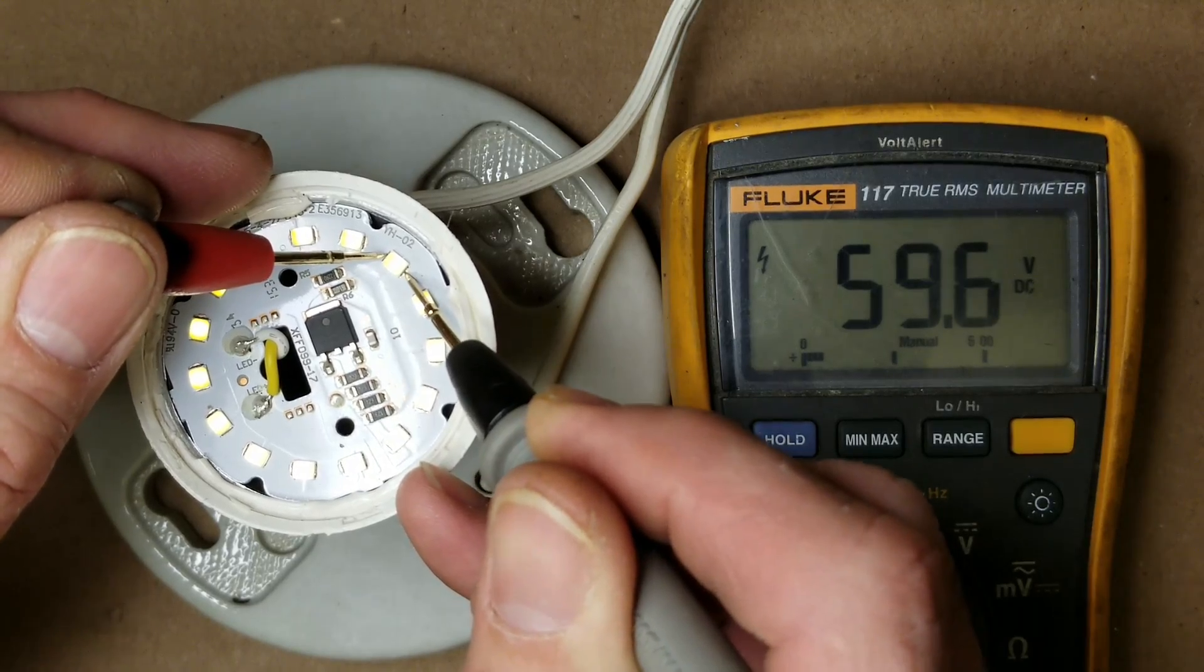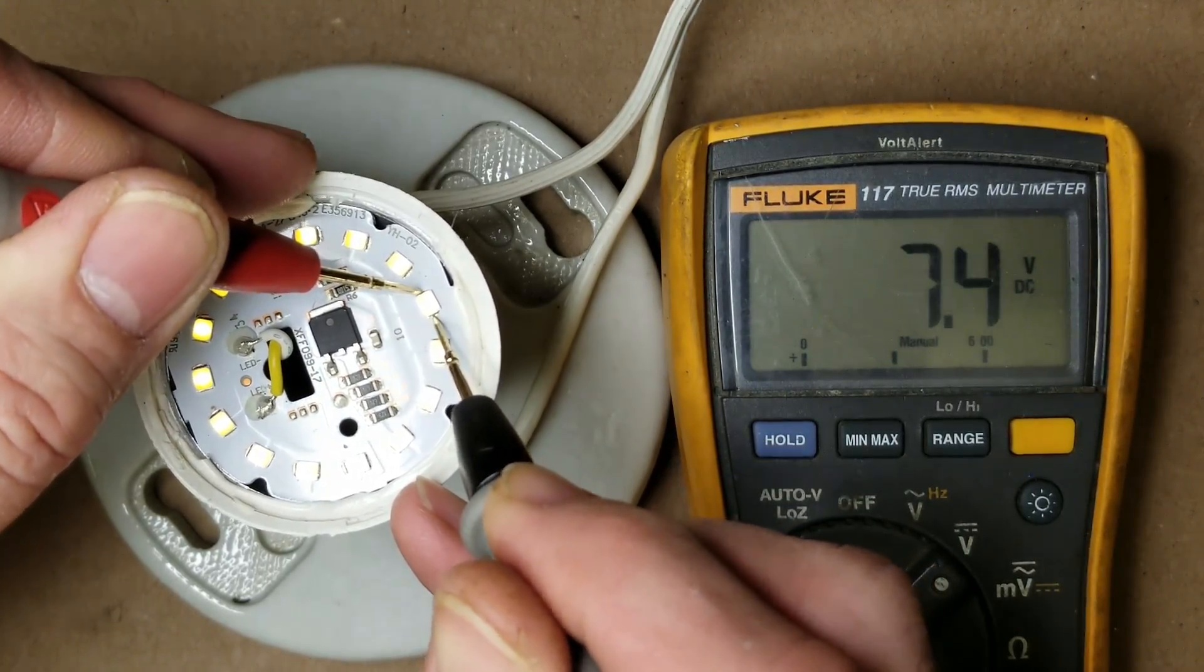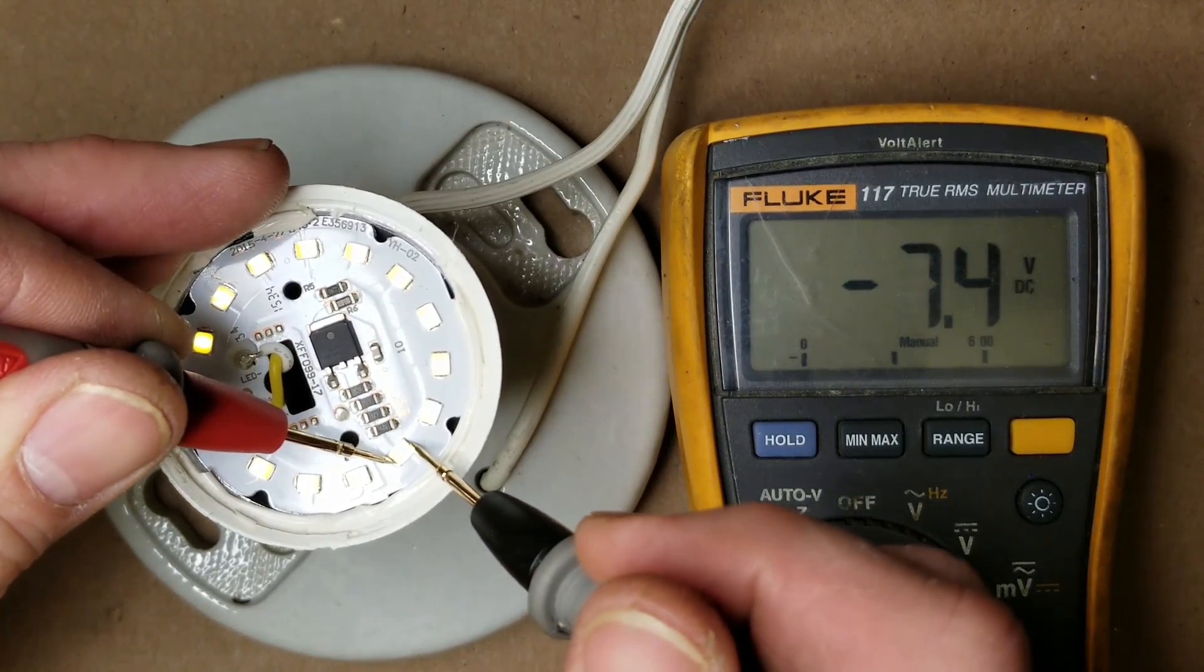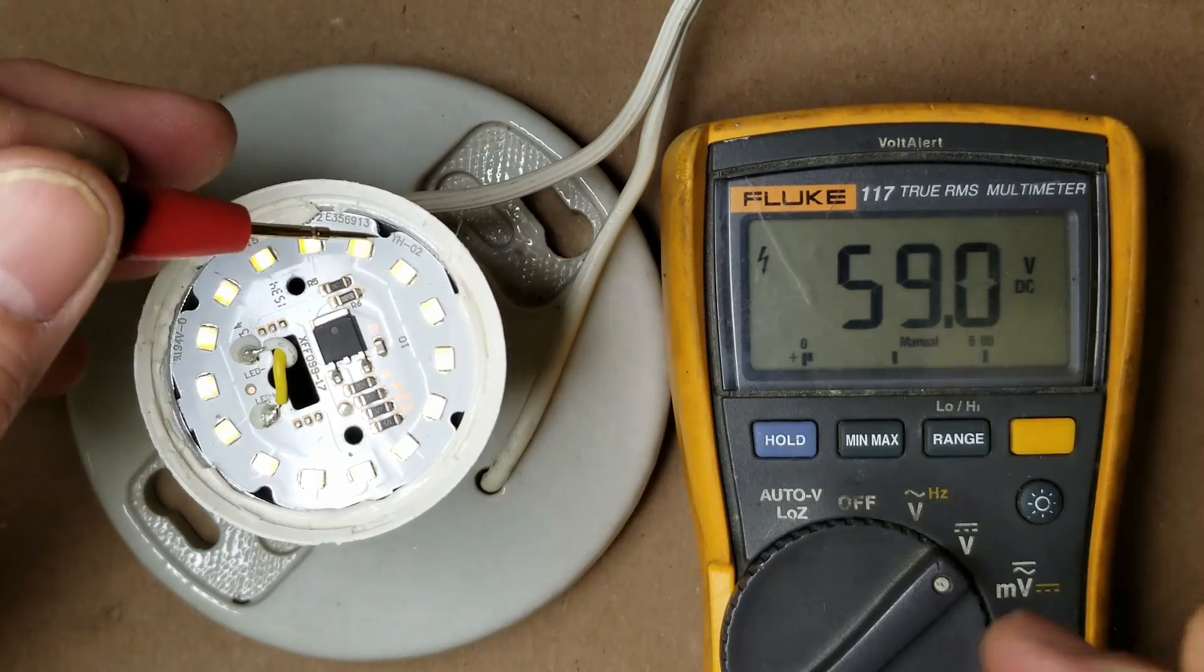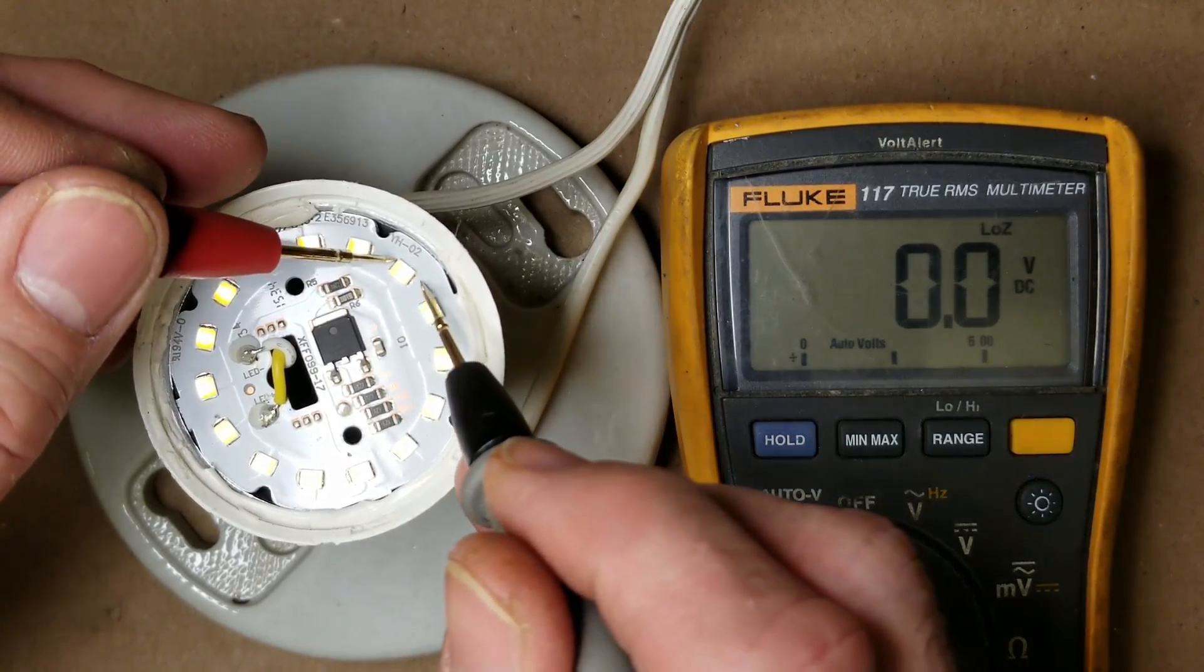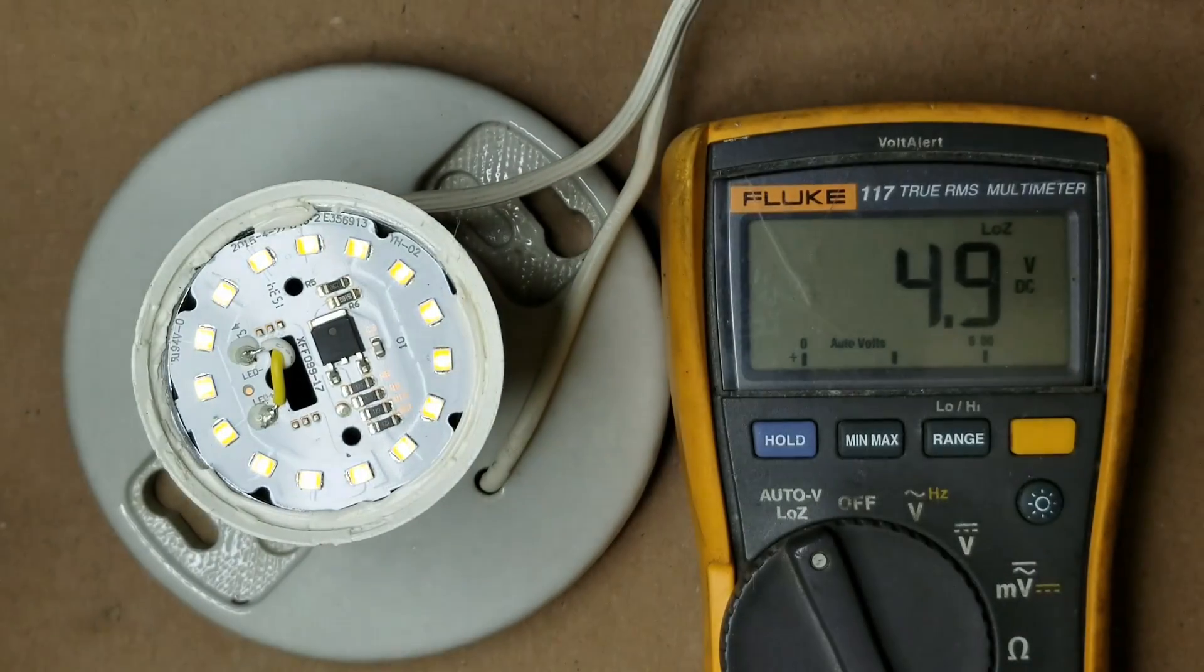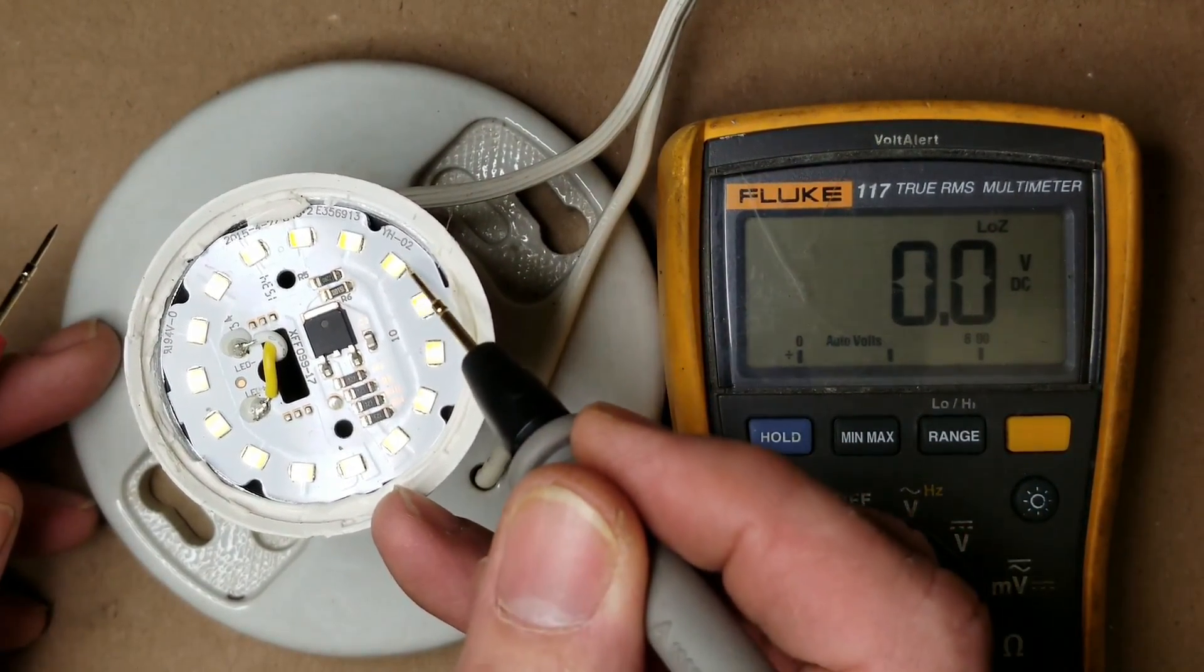There it is. Almost 60 volts dropped across that one LED. So let's put the ohm meter on the low impedance range. This is about a 3000 ohm input on this meter, this Fluke 117. There it goes. Now we've got full brightness and we're dropping about 38 volts across that LED at this point. So we can safely say that one of the LEDs in this package is bad.